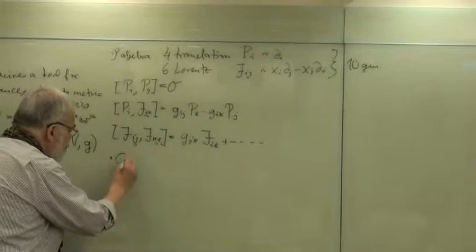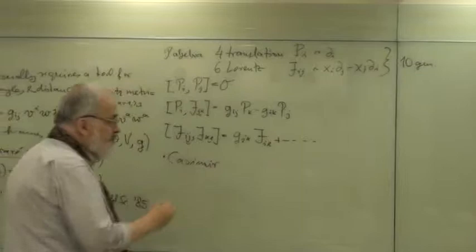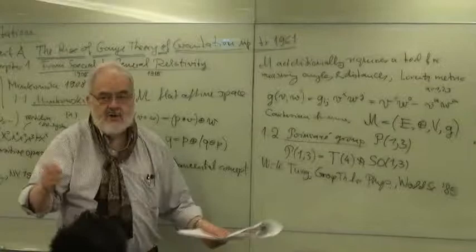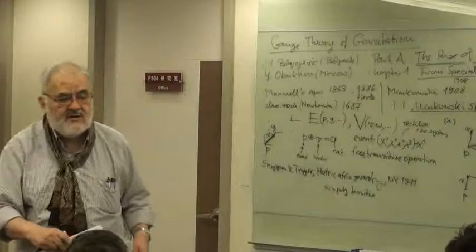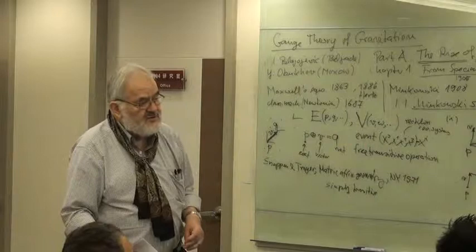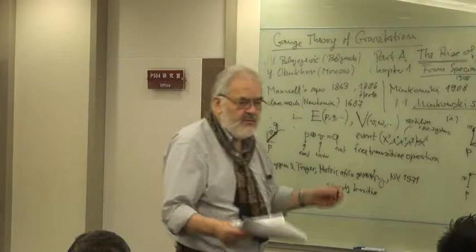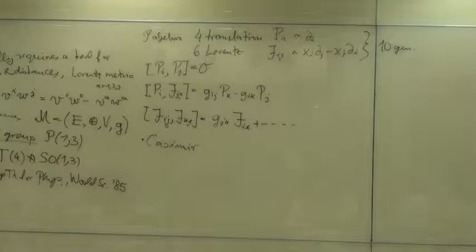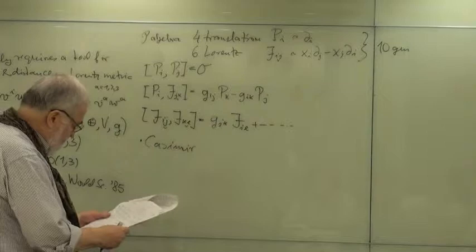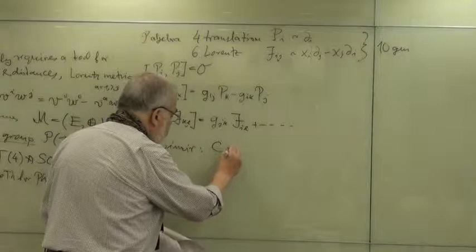You know already from classical mechanics you have 10 conservation laws in classical mechanics. Energy, momentum is 1+3=4, then you have angular momentum is 3, and the theorem for constant motion of the center of mass which is 3 more. So you have in classical mechanics 10 conservation laws. This is reflected also in special relativistic mechanics. The Casimir, Casimir is a Dutch physicist, who studied rotating tops. In this context he studied rotation groups and came to these operators as a physicist.